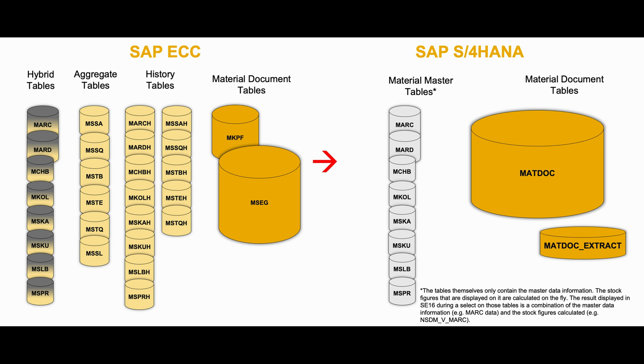For example, in S4 HANA, the material document tables MKPF and MSEG are consolidated into a new table called MatDoc.